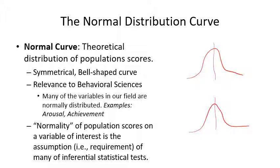When we get to inferential statistics, I'll give examples of what are called assumptions — requirements that need to be met to do the test. The variable being normally distributed is an assumption of every parametric test there is. So just about all parametric inferential statistics tests need a normal distribution, though there are ways to get around that.